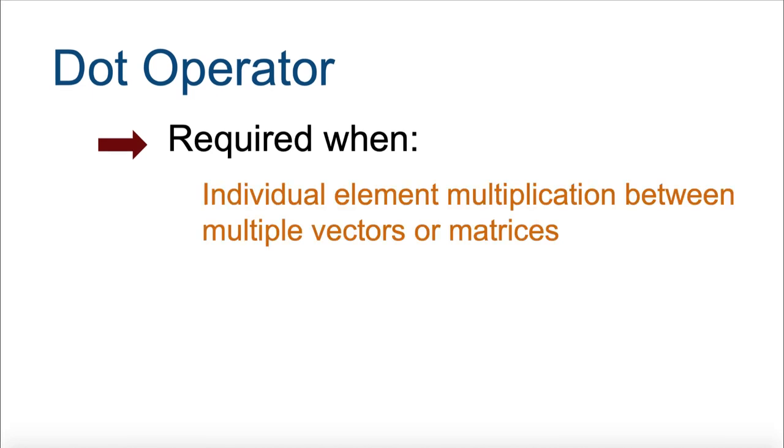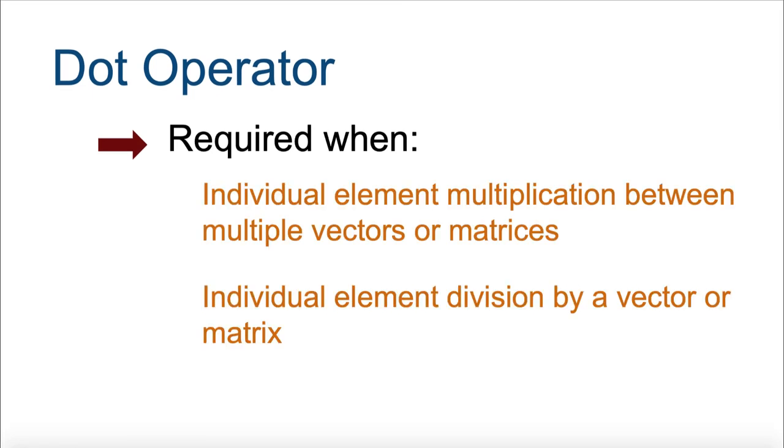But, for individual element multiplication between multiple vectors or matrices, or individual element division by at least one vector or matrix, the dot operator is required.